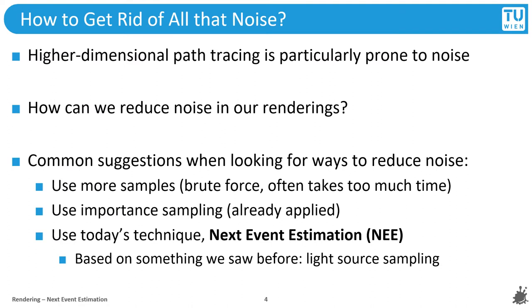Today we will be looking at a technique that can improve the quality of this path traced rendering — with all its color bleeding, multiple bounces, and soft shadows — instantly and significantly. All these multidimensional effects that path tracing can offer: multiple bounces, depth of field, area lights and so on, are impressive but are also responsible for creating noise in our renderings. So how can we get rid of it?